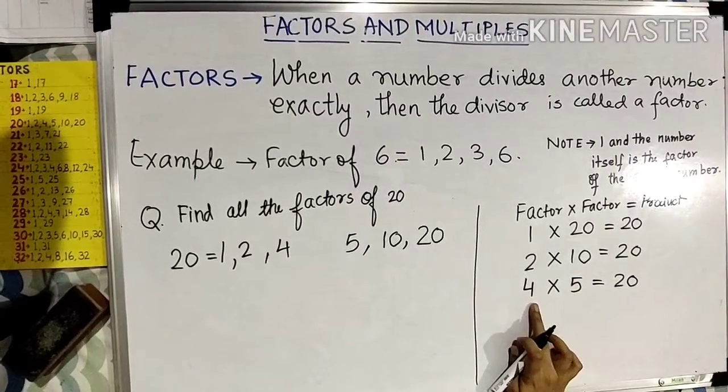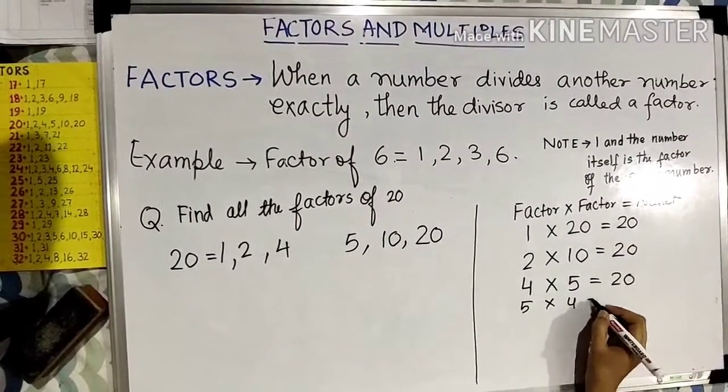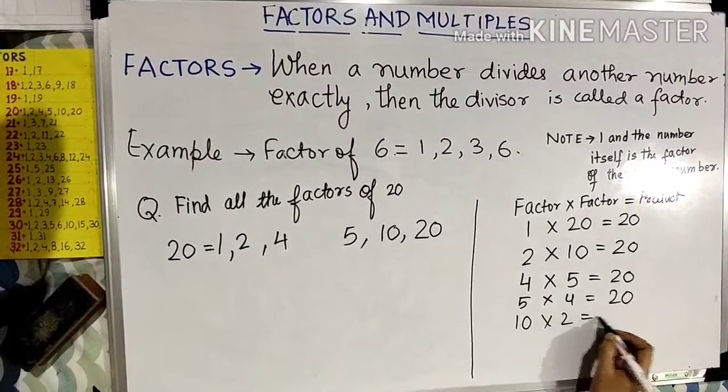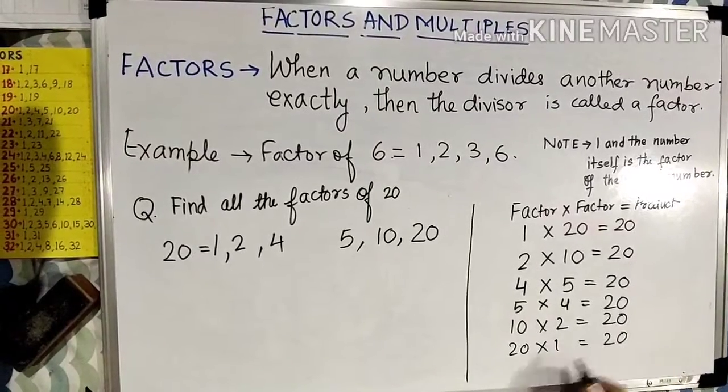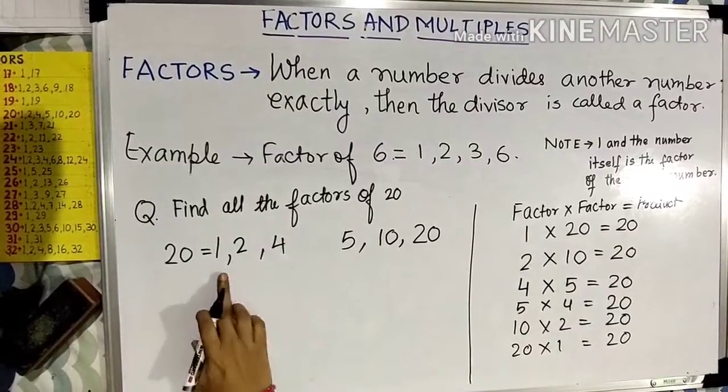Now if we go in reverse order, I can solve 5 into 4. 5 4s are 20, 10 2s are 20, 20 1s are 20. So all these numbers are factors of 20.